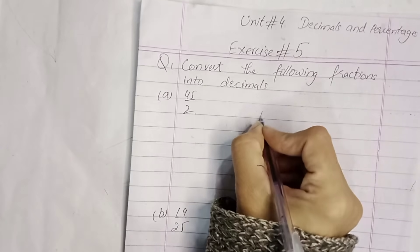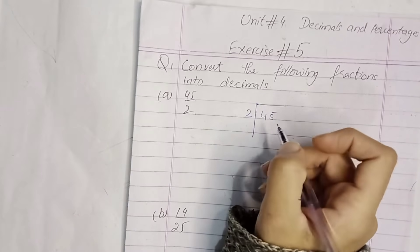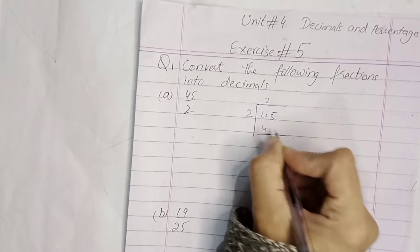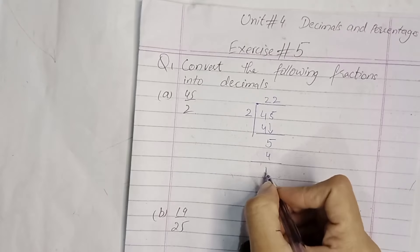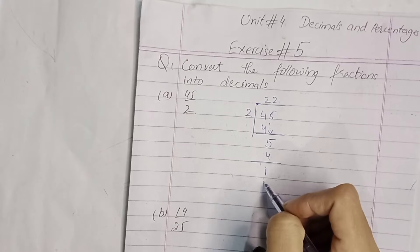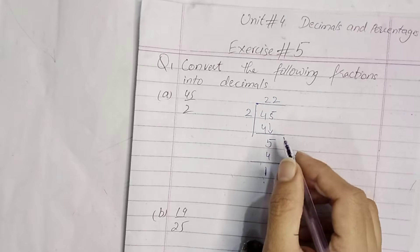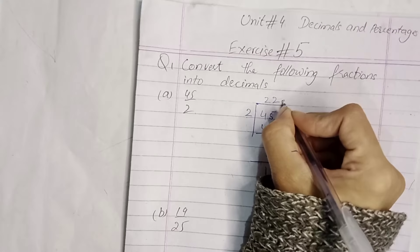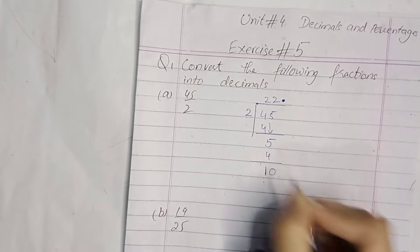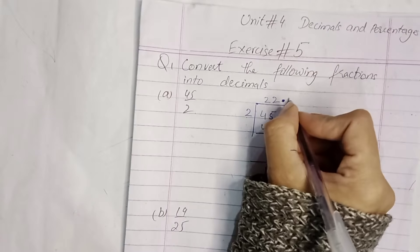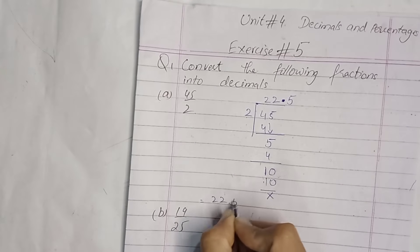Now we will divide 45 by 2. We divide two by two — two twos are four. Here is five below, then one two is two, one is one. Now see, one is smaller than two. We need decimals here, so we will add a decimal point and add 0. Then we will bring down 10, and the answer is 22.5.